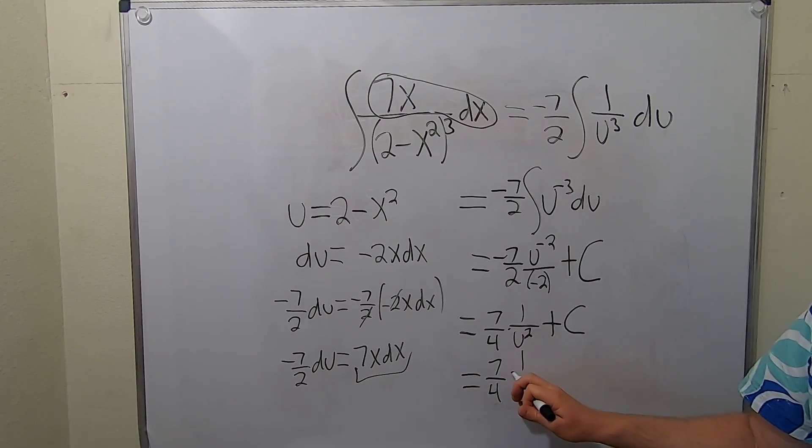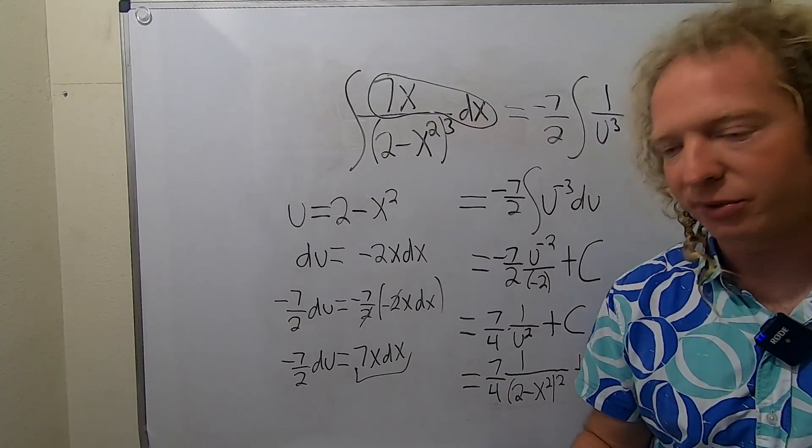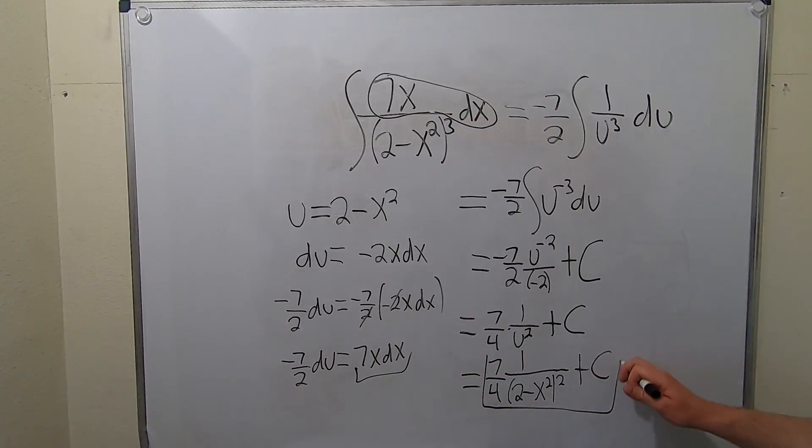Let's replace our u with 2 minus x squared. So this is 7 fourths, 1 over parentheses 2 minus x squared squared, and don't forget the plus capital C. That would be the final answer.